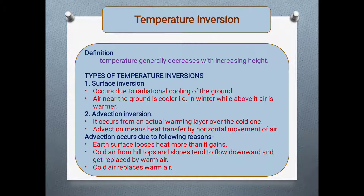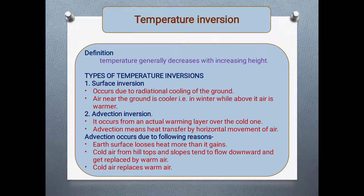There are mainly two types of temperature inversion. The first is surface inversion, which occurs due to the radiational cooling of the ground surface — the air near the ground is cooler in winter while above it the air is warmer. The second type is advection inversion, which occurs from an actual warming layer over a cold one, where heat energy is transferred by the horizontal movement of air.